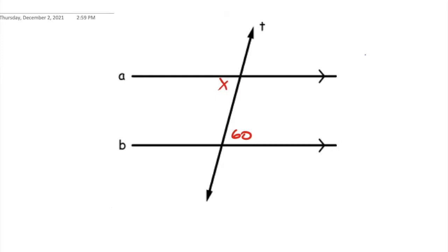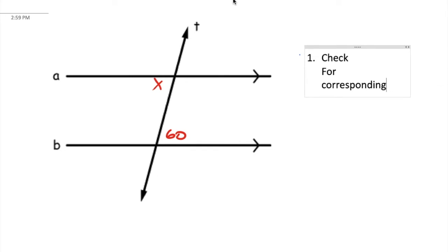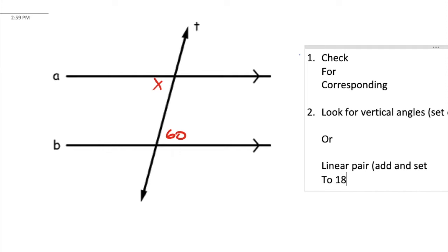First step is we're going to check for corresponding. The second thing we're going to do is look for vertical angles and set them equal. Or if you see a linear pair, we're going to add and set to 180.